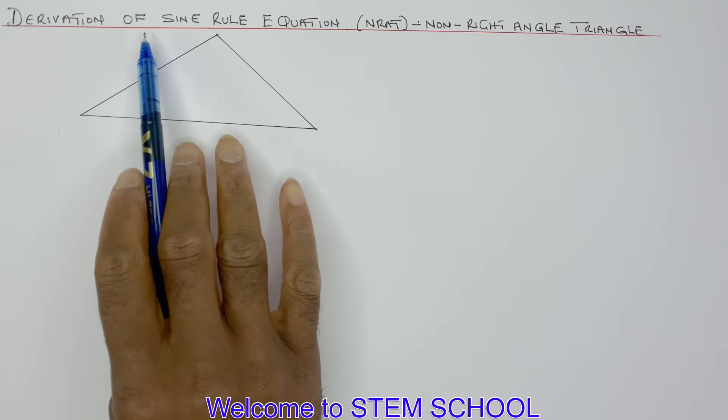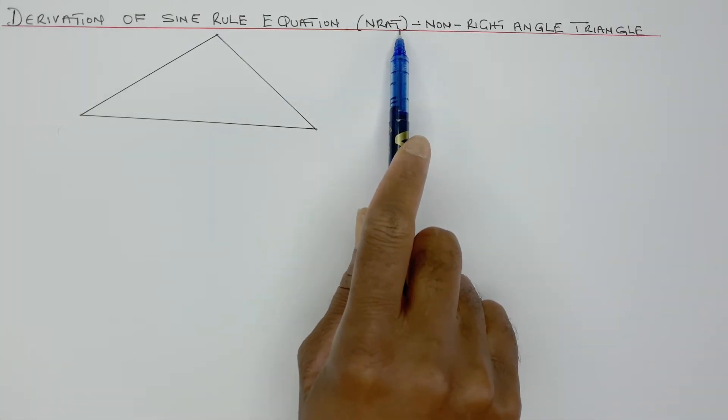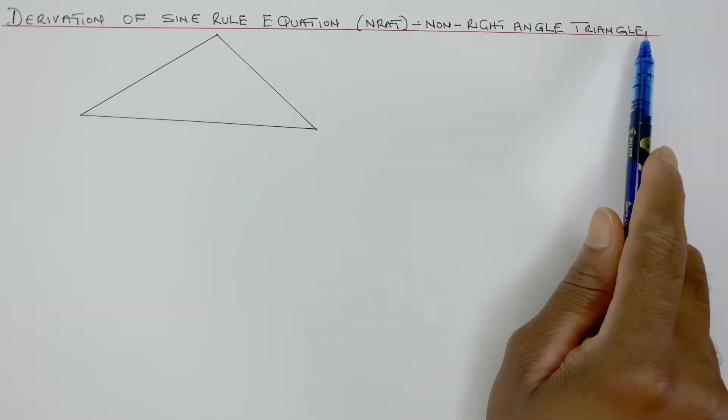Derivation of sine rule equation, NRAT, which stands for non-right-angle triangle.